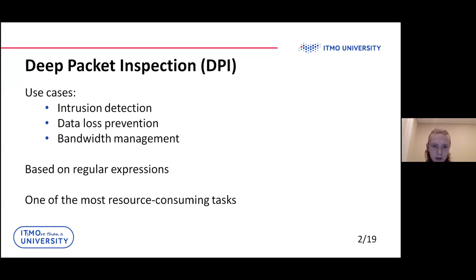Deep Packet Inspection or DPI is a middlebox service. Basically it just filters or redirects traffic based on a set of rules in it. You can use it for intrusion detection, data loss prevention, or just bandwidth management.